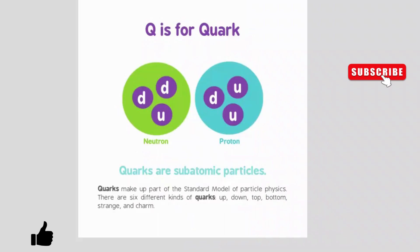Q is for quark. Quarks are subatomic particles. Quarks make a part of the standard model of particle physics. There are six different kinds of quarks: up, down, top, bottom, strange, and charm.